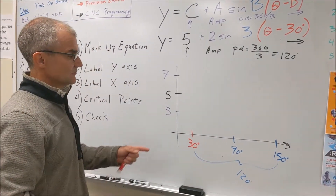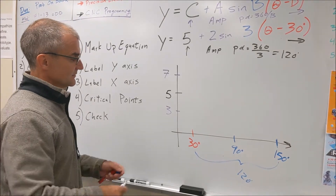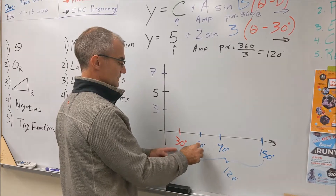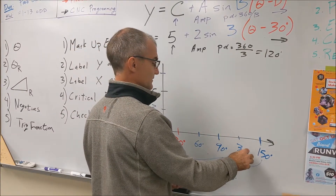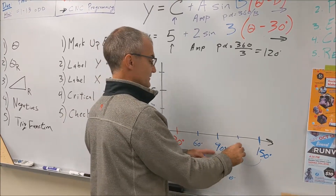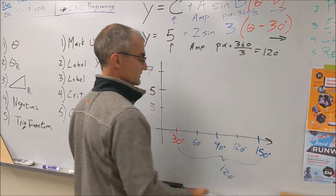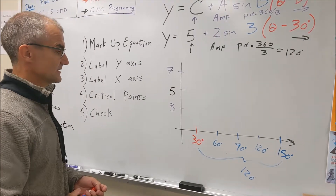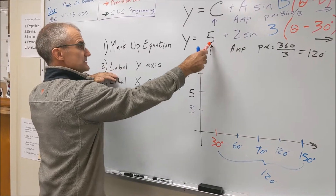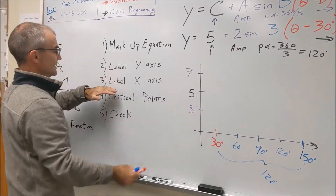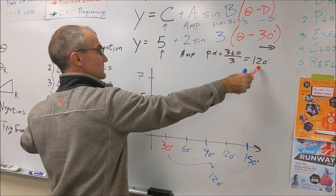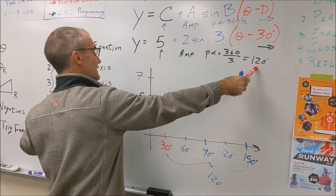My quarter point would be half of that, so I add 30, 30, 30, 30, 30 — giving me all my equal-distance points. Step two is label the y-axis: C plus A and C minus A. Step three: label the x-axis — where I start, and 360 divided by 3 to find how many units later I end.